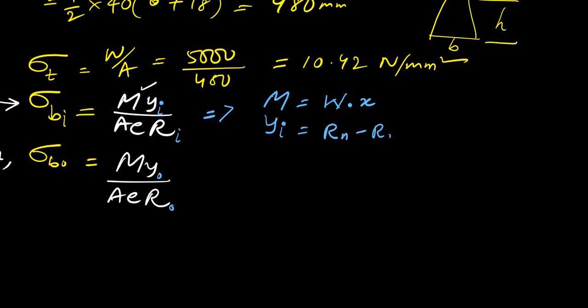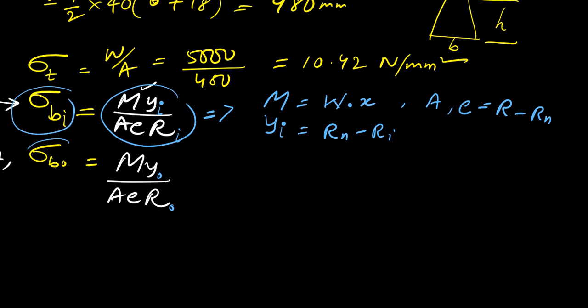e is the distance from the neutral axis to the centroidal axis, so e = r − rn. All terms have been explained — just substitute everything into the equation. Similarly, for the outer surface stress: M = W·x again, and y_o = r_o − rn as per the diagram. The modified equation uses r_o as the outer surface radius.